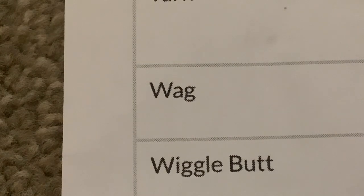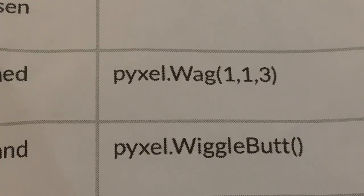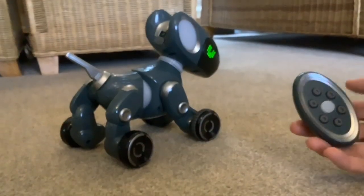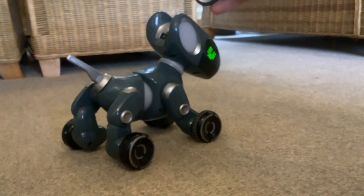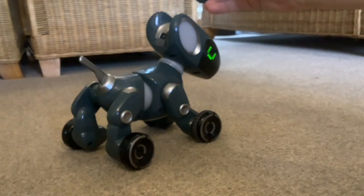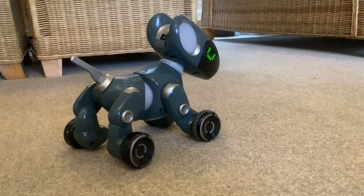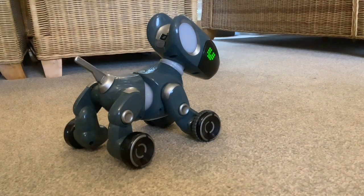The next command is wag — wags tail at a user-defined speed. The Python code is pixel.wag with three digits in the brackets. I think the first one is just on, the second one is speed, and the third one is duration. That's number six. Looks like fast speed for about three seconds — actually it's gone slow, so that's slow speed for three seconds. I'll be looking at the numbers and what each one equals in the future, once I've drawn up a chart.